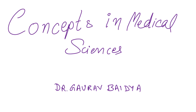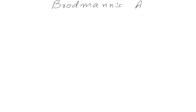Hello, my dear friends. I'm Dr. Gaurav and in this video we are going to talk about different areas of the brain. Each and every area of the brain is responsible for its own specific function. If there is injury in a particular area of the brain, that injury is going to result in a decrease in the function of that particular region. We talk about these areas in terms of Brodmann's areas, which are the nomenclature given to different areas of the brain.